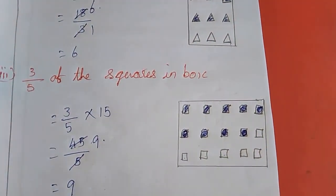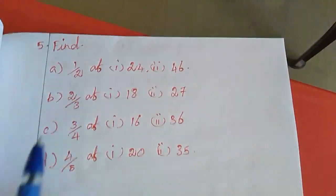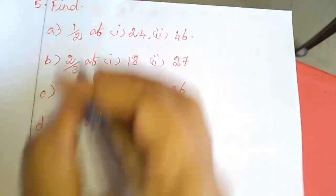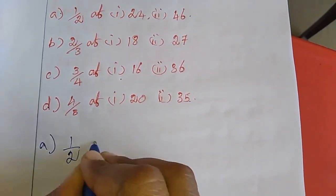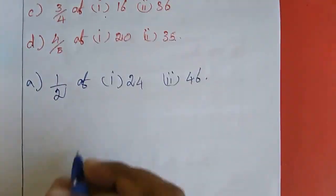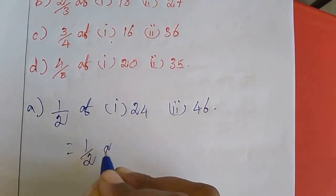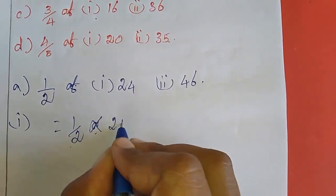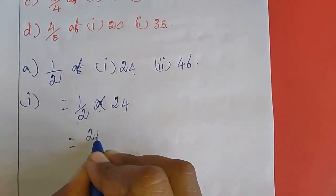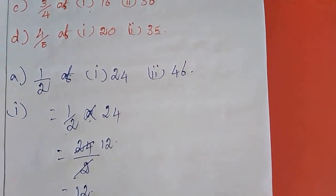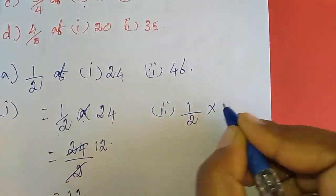Now we will move to the next sum — find the value. In this, four sums are given: a, b, c, and d. I will do a and d; b and c are homework for you. First sum: a is 1 by 2 of 24 and 46. So write 1 by 2 multiplied by 24, which equals 24 by 2. If you cancel you will get 12. So the answer for the first is 12.